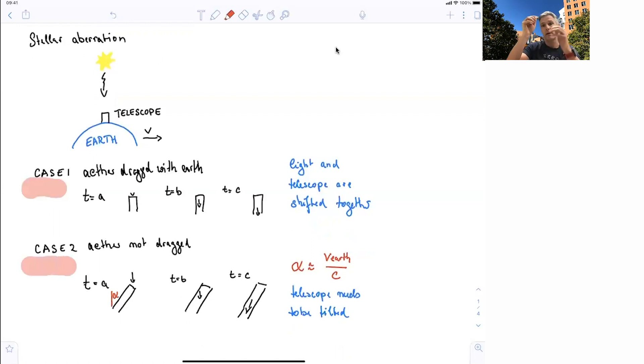Because after the light hits the top of our telescope, the telescope keeps moving because it's in a different reference frame. Therefore, we have to have this light tilting, and the value of the tilt is equal to velocity of the Earth over c.